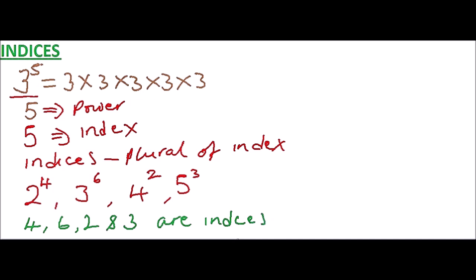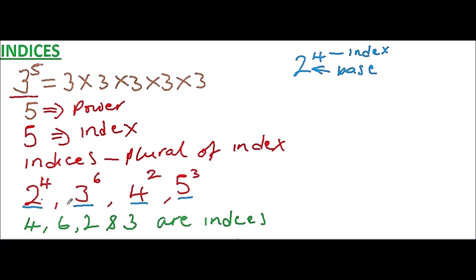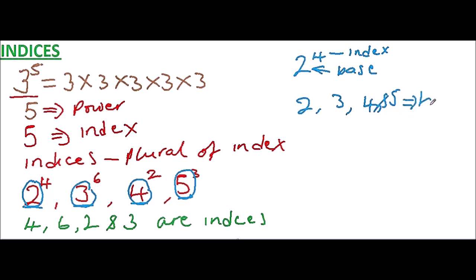The other numbers — we have 2, we have 3, we have 4, and 5. So in 2 to power 4, the 4 is the index. When there is more than one, we call them indices. And 2, 3, 4, and 5 can be referred to, in plural, as the bases. So that is the meaning of the term indices — it is the plural of index, and index is the same as power. It is something that you have dealt with in the past.